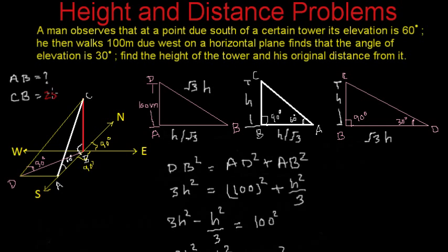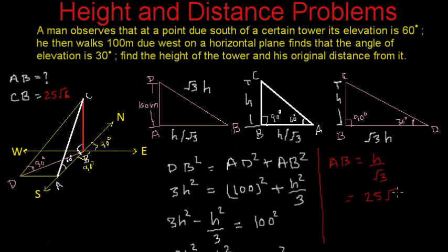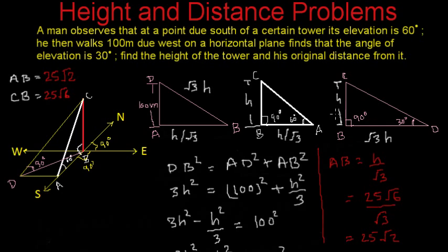The height CB equals 25 root 6. The original distance from the tower is AB, which equals H over root 3, that is 25 root 6 divided by root 3, which equals 25 root 2. So the original distance from the tower is 25 root 2. This was a slightly tricky problem, but if you are able to visualize all the right-angled triangles formed, the problem becomes very simple. Keep watching MathSmart, bye-bye till then.